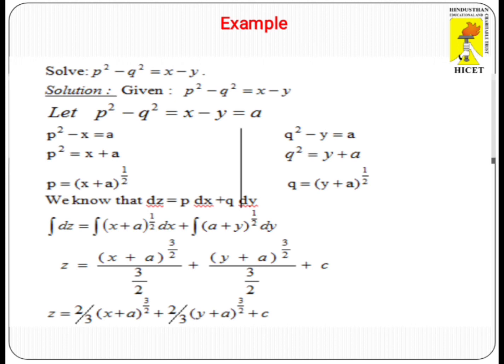The left side is assumed equal to some constant A: P² - X = A, giving P = (X + A)^(1/2). Similarly, Q² - Y = A gives Q = (Y + A)^(1/2).